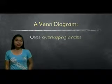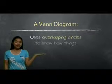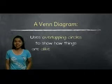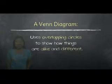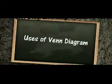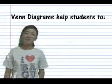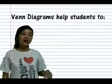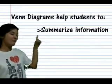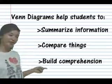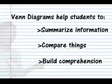A Venn diagram uses overlapping circles to show how things are alike and different. Venn diagrams help students know how to summarize information, compare things, and build comprehension.